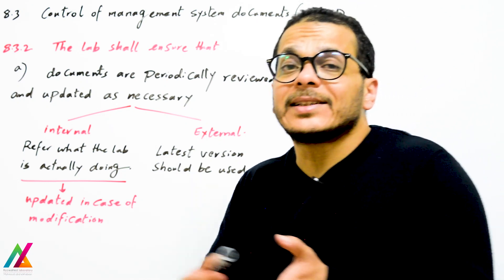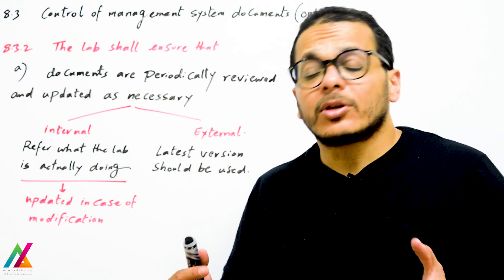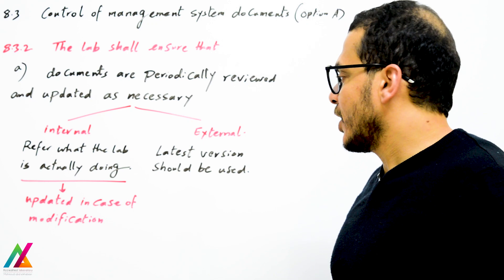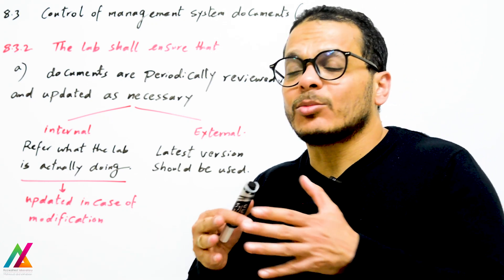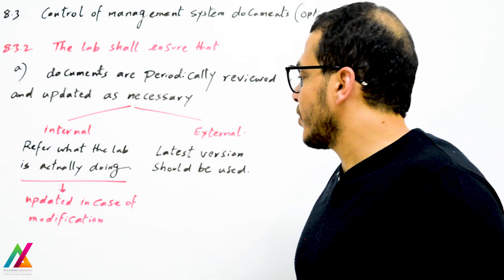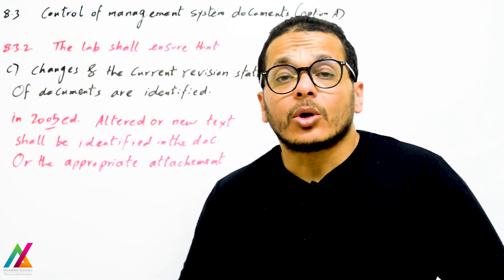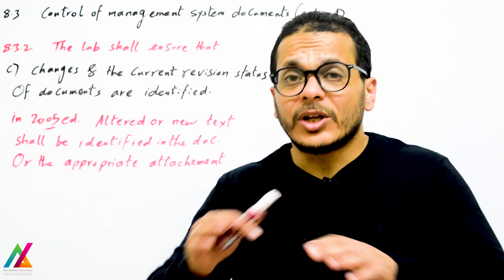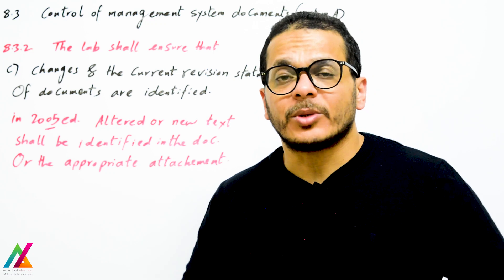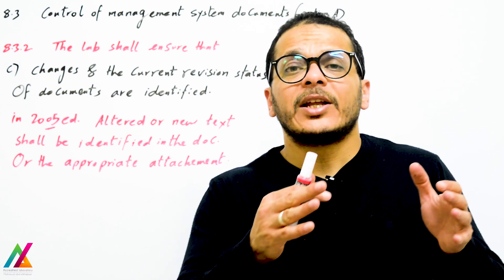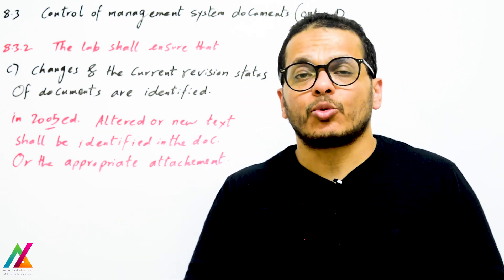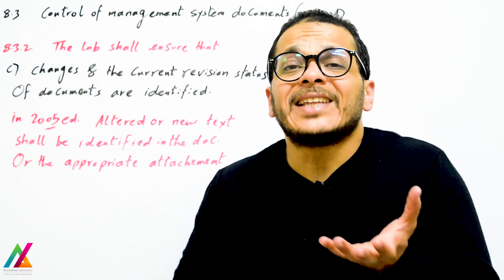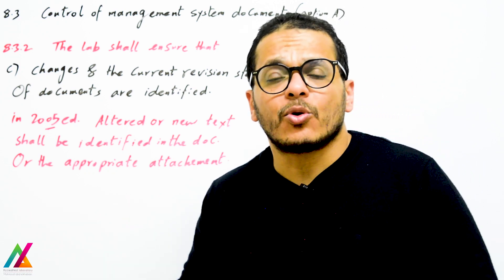The lab shall also ensure that documents are periodically reviewed and updated as necessary. For internal documents, if there is any modification they shall update the document and record the modification in detail. For external documents, the latest version should be used. All documents under the quality management system shall be revised within a specific schedule — for example, every three months reviewing a specific set — so that by the end of the year all documents have been revised.